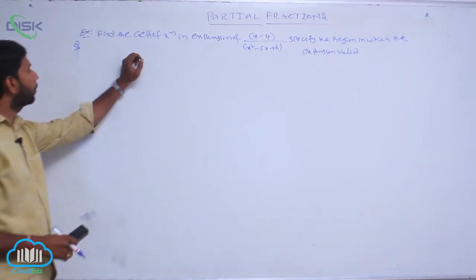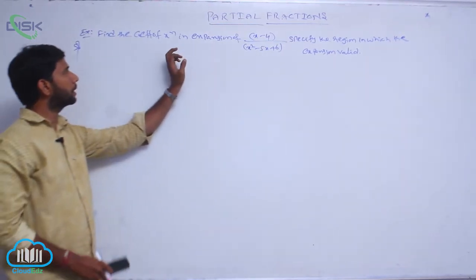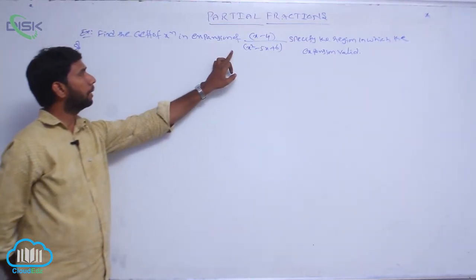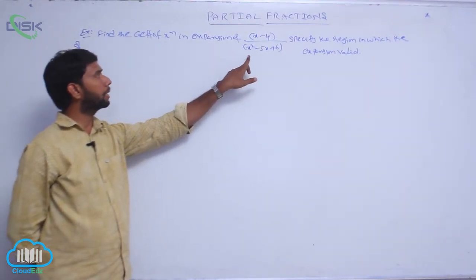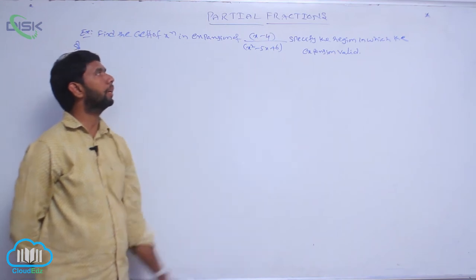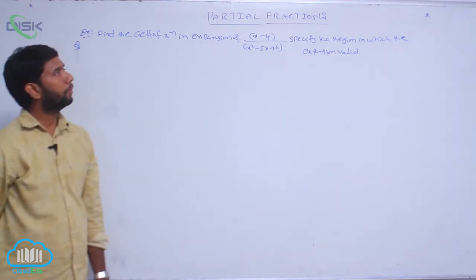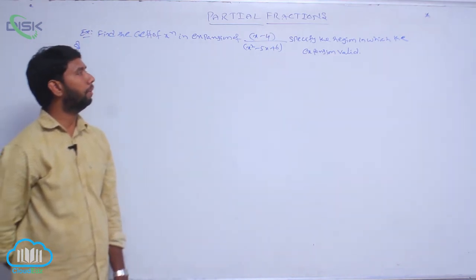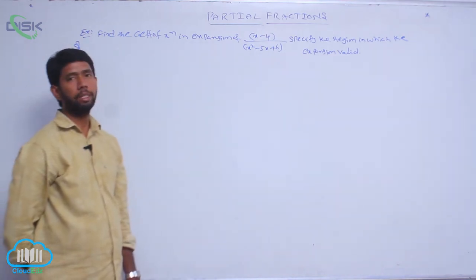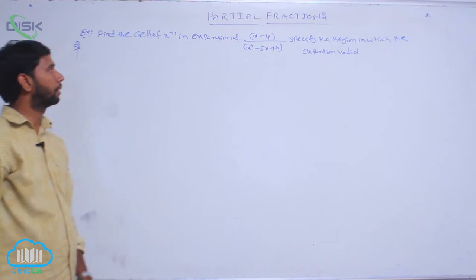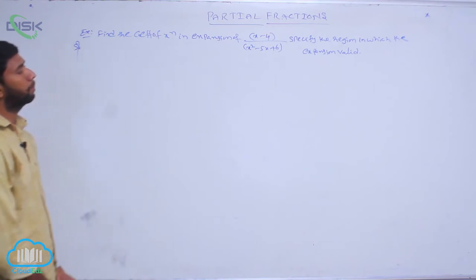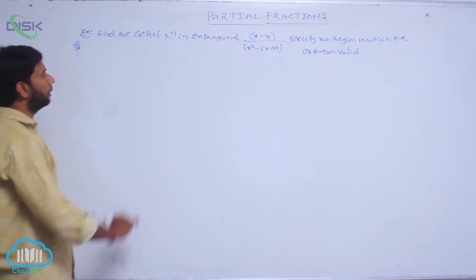Find the coefficient of x^n in the expansion of (x minus 4) by (x squared minus 5x plus 6). Specify the region in which the expansion is valid.